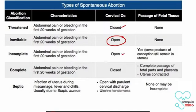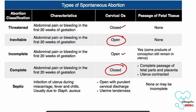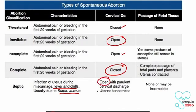In incomplete abortion the uterine size is less than the period of gestation due to loss of some products. In complete abortion the cervix is closed — due to complete passage of fetal products the uterus is contracted and the uterine cavity is empty. In septic abortion there will be fever with chills, usually due to Staph aureus, and there will be purulent cervical discharge on examination. The cervix is open and uterine tenderness is present. There may be no passage of products or sometimes incomplete passage of products.